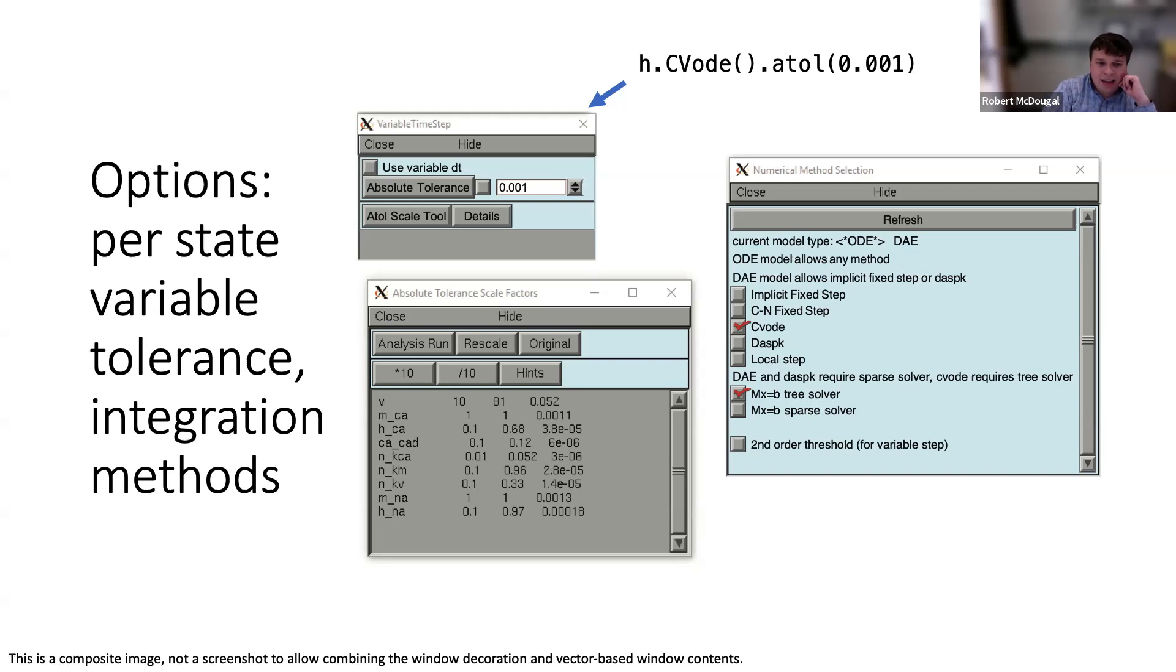It's not quite that simple though. If you think about voltage during an action potential, it might swing from negative 80 to 40 millivolts—quite a large range, over 100 millivolts. So 10 to the negative 3 millivolts is pretty small. But if you're talking about a gating variable like m, h, or n in Hodgkin-Huxley, those always live between zero and one—two orders of magnitude smaller range.